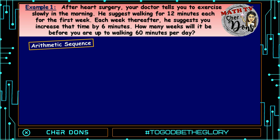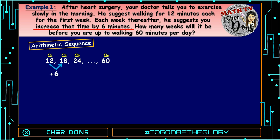Now, let us try to form the sequence: 12, 18, 24, and so on until we reach 60. Because, based on the problem, the doctor wants to increase the time by 6 minutes every week. So, we add 6 to 12, it is equal to 18; plus 6, that is 24, and so on until we reach 60.